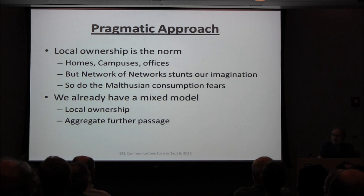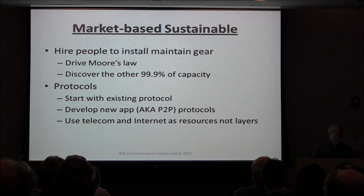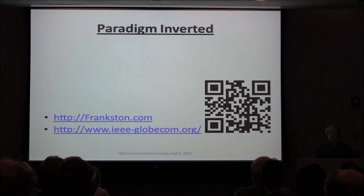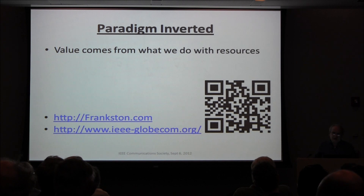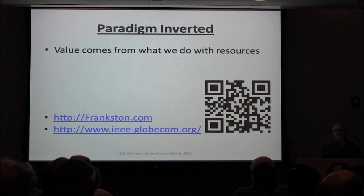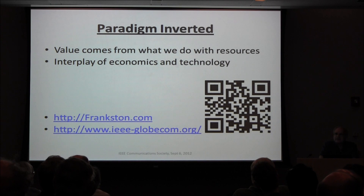We already have the mixed model of local ownership and aggregating further. All your devices in your home share a common internet connection — businesses share a connection. The aggregation cost advantages are huge. Buy dark fiber — pay once and use it forever. Better gear means more capacity. So you treat all this as resources. We've inverted the paradigm: realize the value comes from what we do with resources, not intrinsic in the resources. We're not short of silicon for fiber or glass. Technology is driven by business decisions and economics.